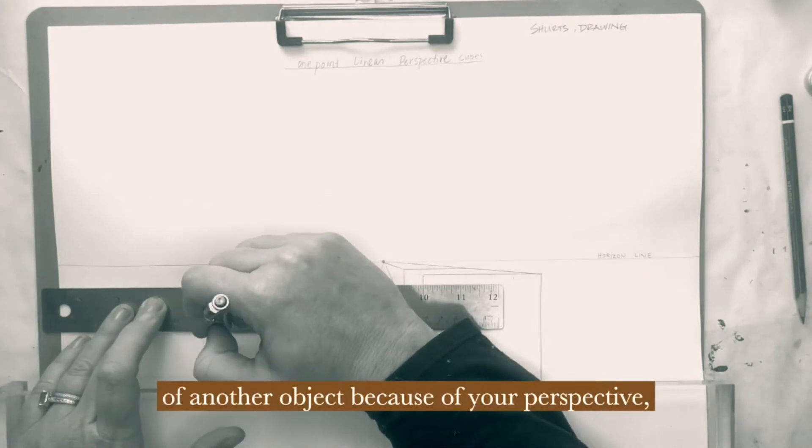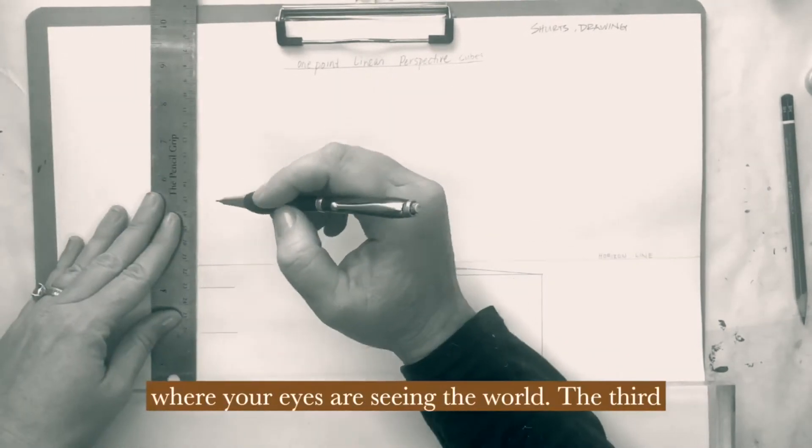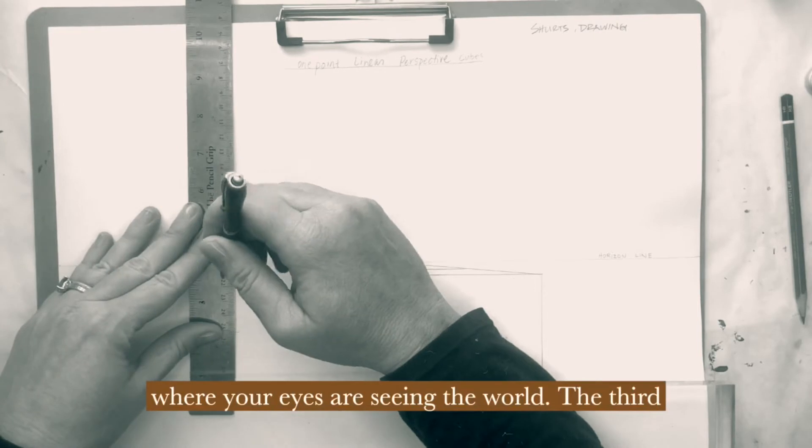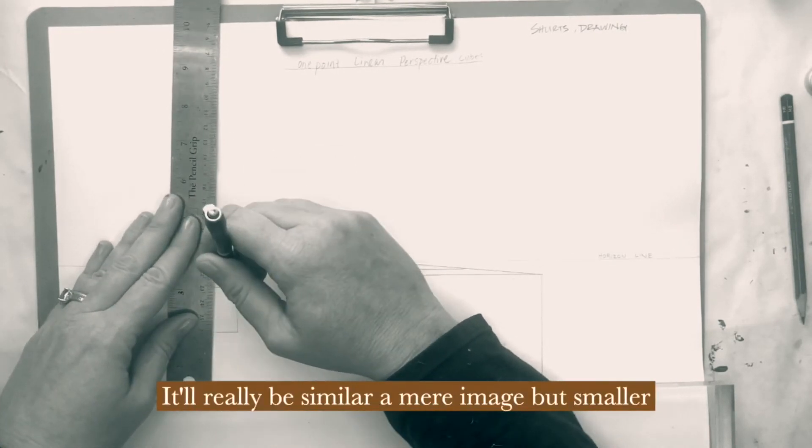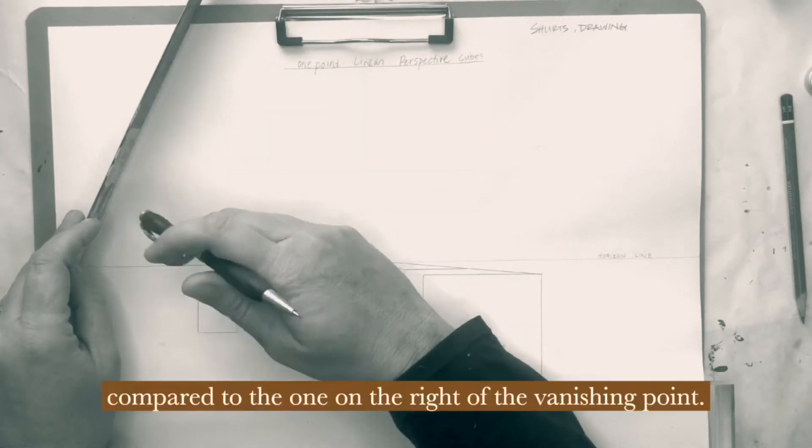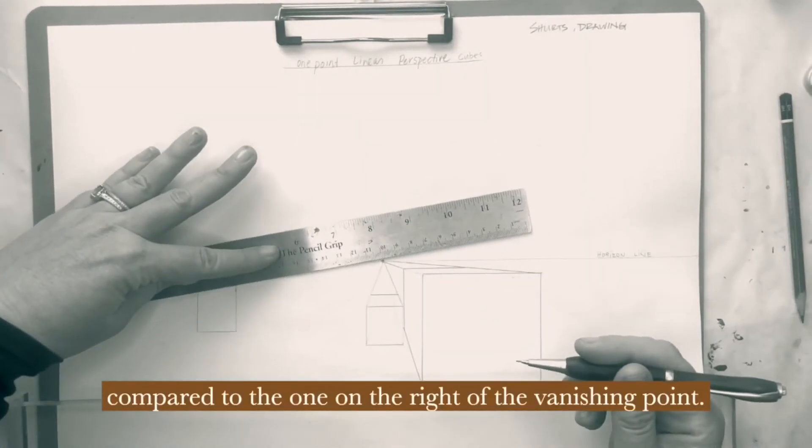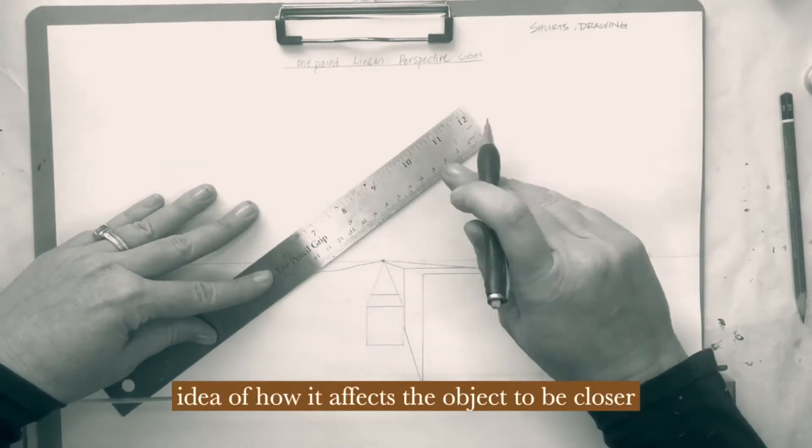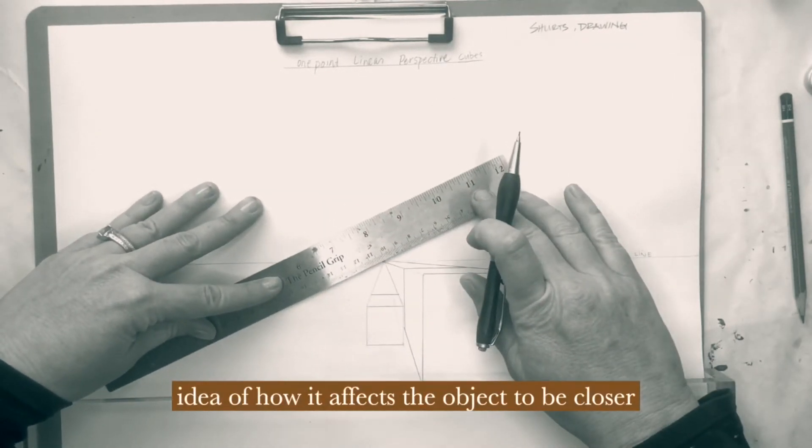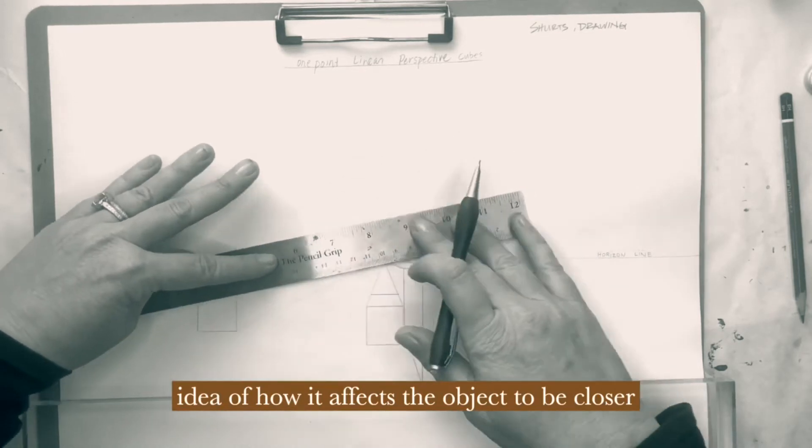The third one, I decided to do smaller on the left-hand side. It'll really be similar, a mirror image, but smaller, compared to the one on the right of the vanishing point. It's very imperative that you start to get an idea of how it affects the object to be closer to the vanishing point, further away to the vanishing point, along the horizon line.